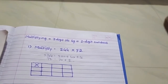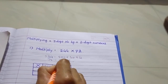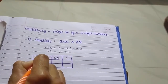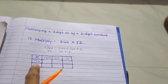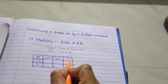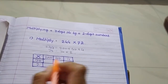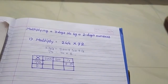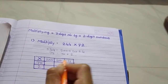Ab yeh value hum kaise put karenge — sabse pehle upar wali value yahan likhenge: two hundred, forty, and four. And 72 ke liye: right here seventy, right in box two. Ab hame multiply karna hai. Sabse pehle seven fours are twenty-eight — yahan zero last mein laga lenge, toh four zero zero aata hai. Then seven fours are twenty-eight. Then forty hai — one zero, two zero, so right here two zero.